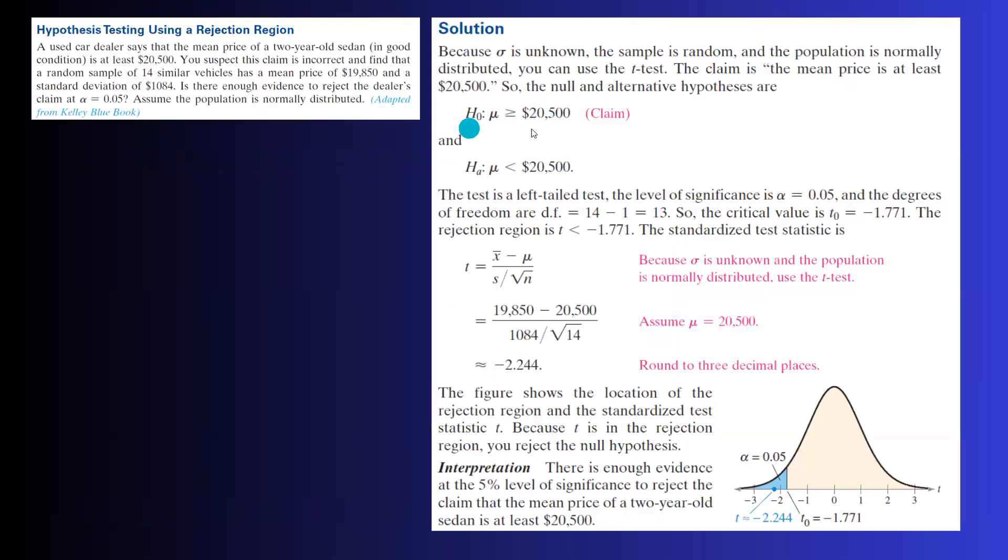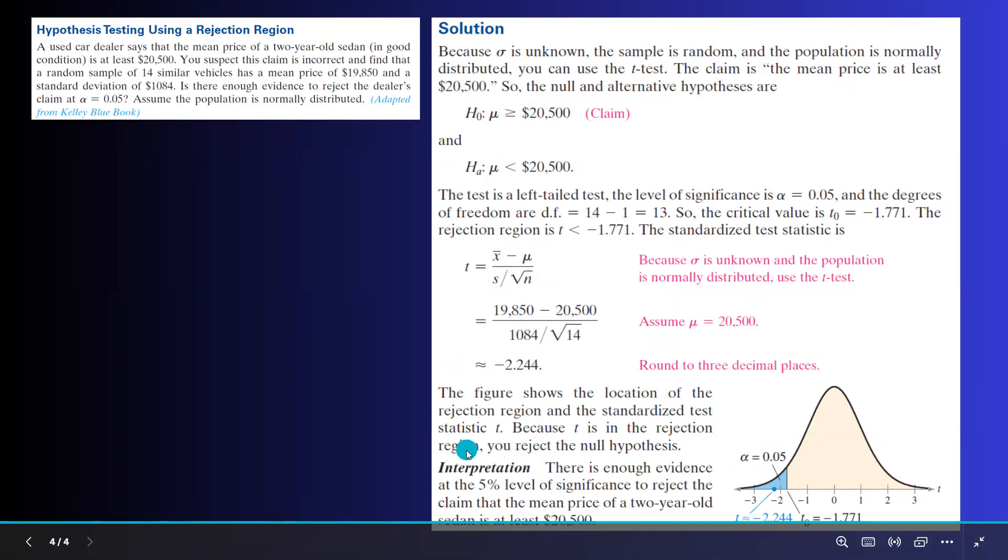We write down the null and alternative hypothesis. We find the critical value. Then we move on and calculate the standardized test statistic. And as you can see, it lands in the rejection region. So you reject the claim. There is enough evidence at 5% level of significance to reject the claim that the mean price of a two-year-old sedan is at least $20,500.